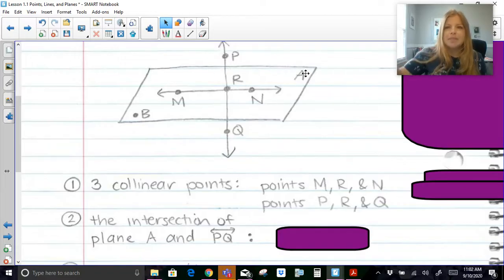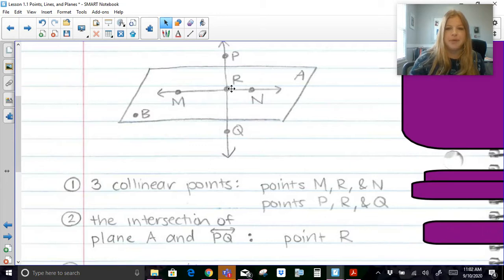If I said to name the intersection of plane A and line PQ. Plane A, remember, is like a piece of paper and PQ would be like a pencil going through that paper. Think about what the intersection is of a piece of paper and a pencil going right through it. It wouldn't be a line, it would just be that point. So the intersection of plane A and line PQ is point R.